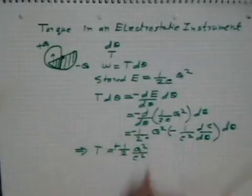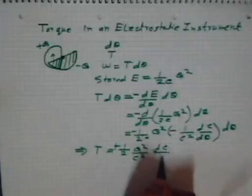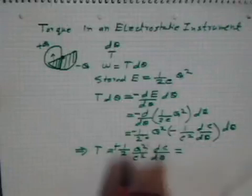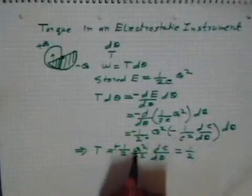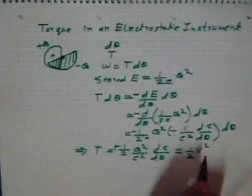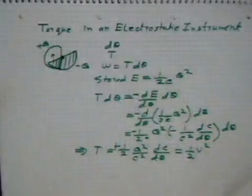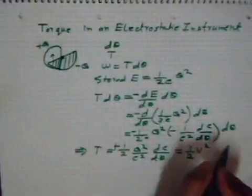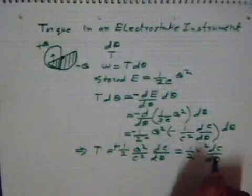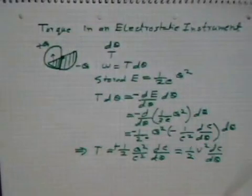And this is equal to half Q²/C², which is equal to V² if V is the voltage across these two plates at that instant. So this is V² dC/dθ. Done.